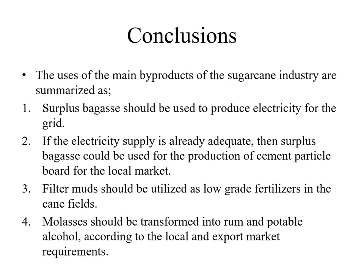In conclusion, the uses of the main by-products of the sugar cane industry are summarized as follows: surplus bagasse should be used to produce electricity for the grid. If electricity supply is already adequate, then surplus bagasse could be used for the production of cement particle board for the local market.